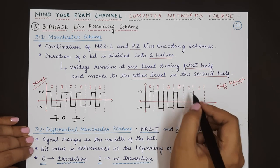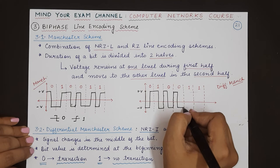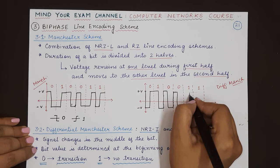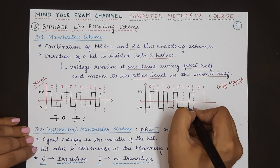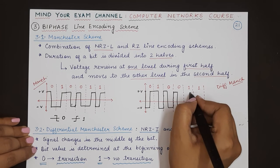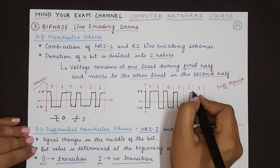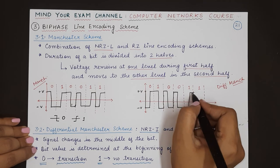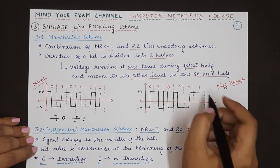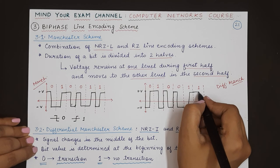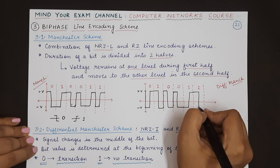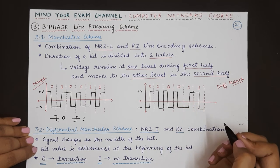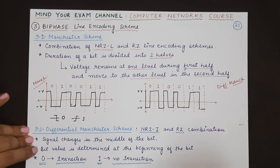For 1, we do not change the voltage level — the same voltage continues until the middle of the bit. For the next 1, again we do not change the current level, continue it until the middle of the bit, then change it in the second half.